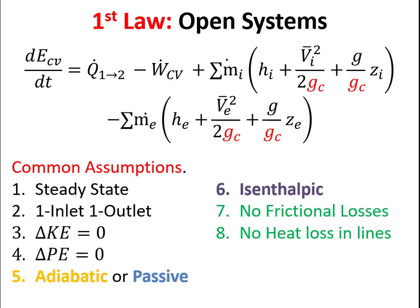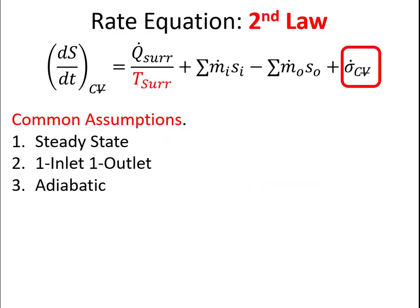We can do a first law analysis on all the different components. We'll make the assumptions below for every component, looking to see whether or not we are adiabatic or passive in each component. And maybe if it's a nozzle, we'll then say that it's isenthalpic or that H does not change. If we need to, we can also do a second law analysis and make sure that the process is possible by ensuring that our entropy generation term is positive.